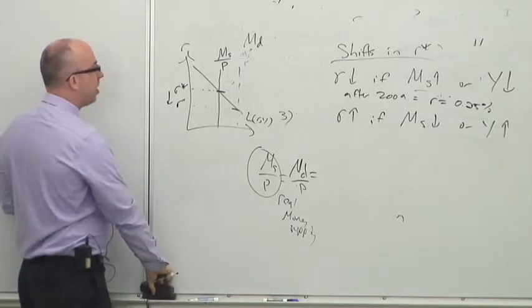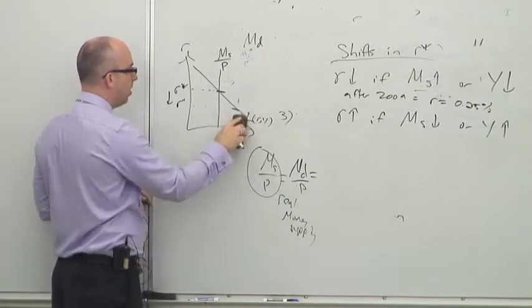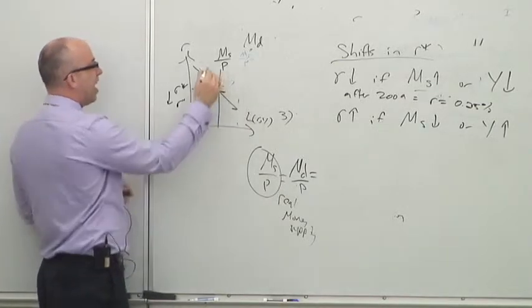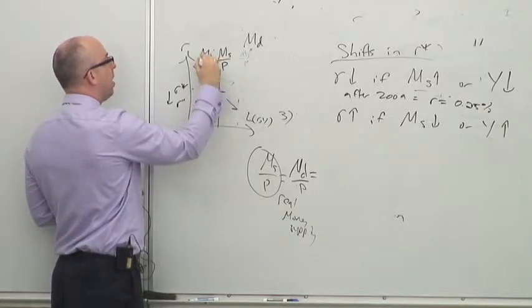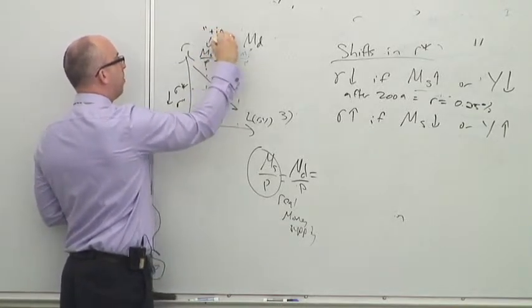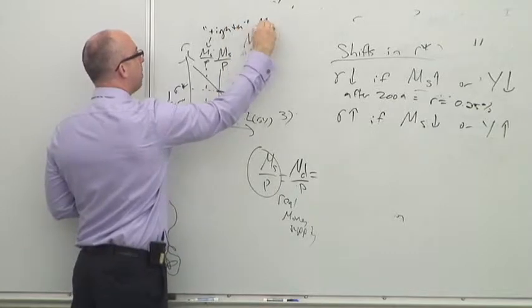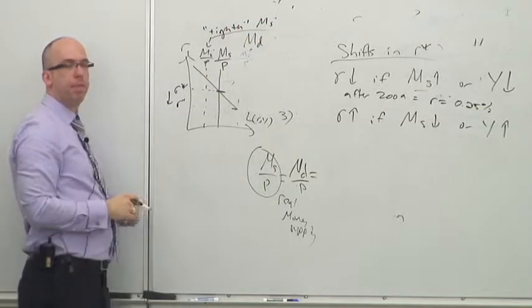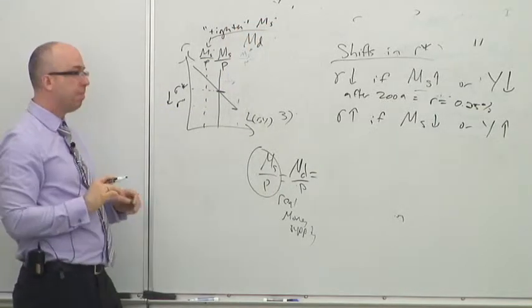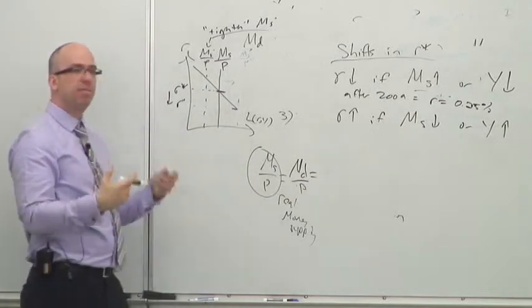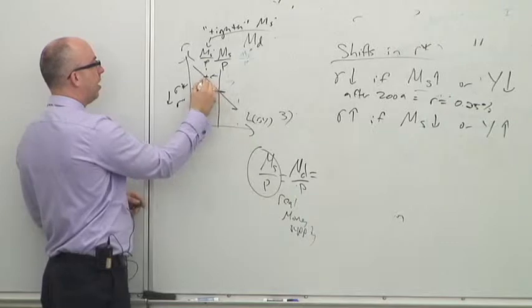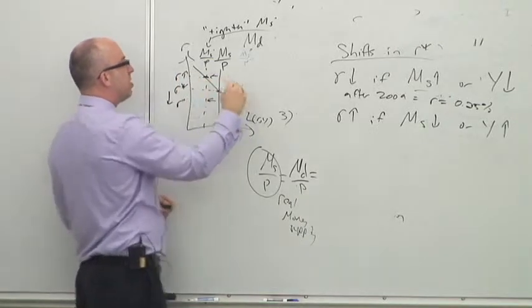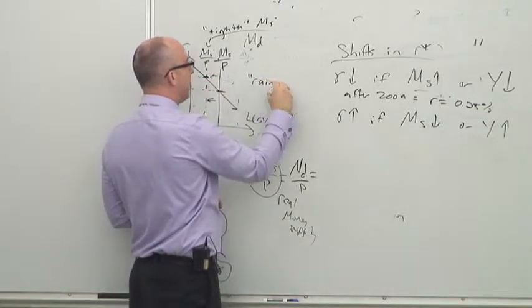You could go the other direction and say the Fed is going to tighten the money supply. That's a real phrase that people use - the Fed will tighten the money supply. They're basically going to put less money in the economy. If you shift the curve this way, interest rates go up. And so this is what's called raising rates.